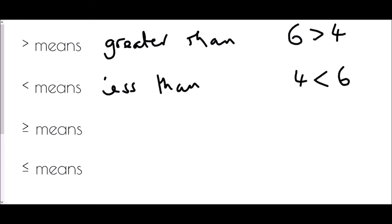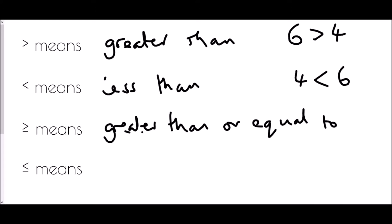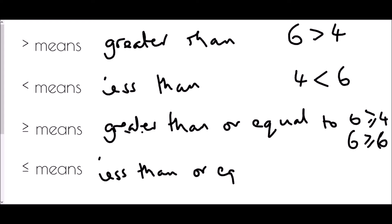The next symbol has an equal sign underneath it, meaning greater than or equal to. So it's true that six is greater than or equal to four, and also true that six is greater than or equal to six — both are correct. The last symbol points to the left with a line underneath, meaning less than or equal to.